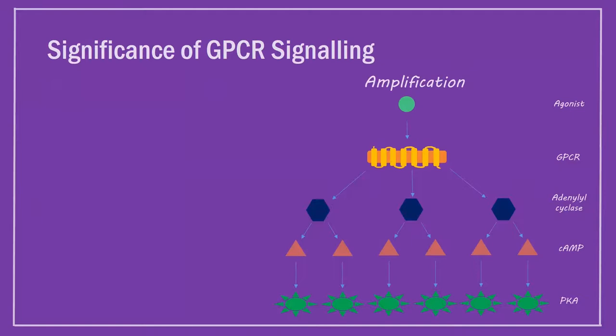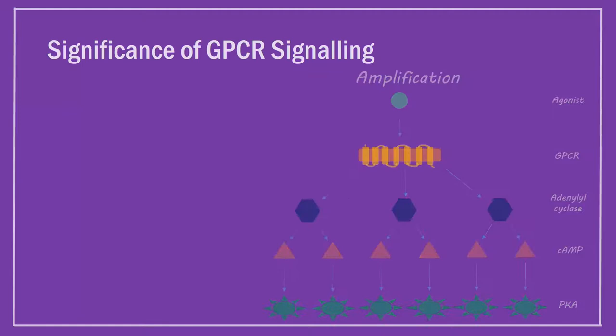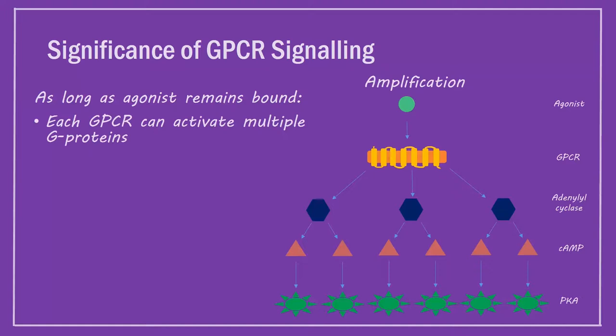The significance of GPCR signaling. Signalling via GPCRs is useful since it results in amplification. As long as an agonist remains bound, each receptor can activate multiple G-proteins.